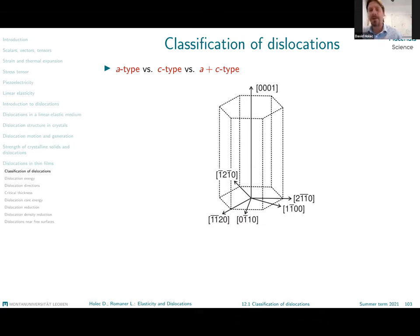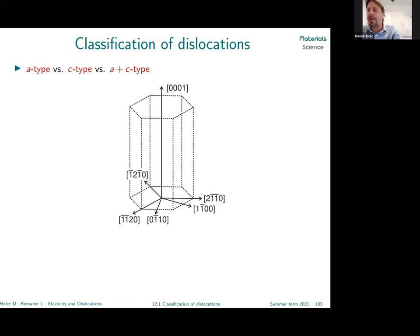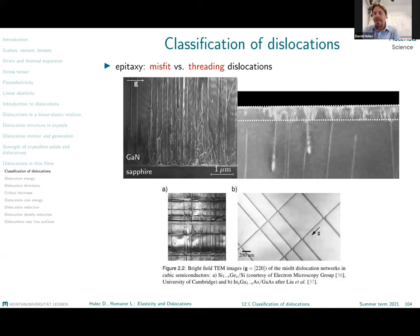I'll be showing here some older examples from my former work on hexagonal materials where this terminology will become important. And finally, what is most important for today's lecture are terms such as misfit and threading dislocations.